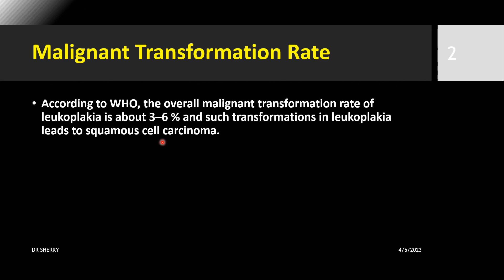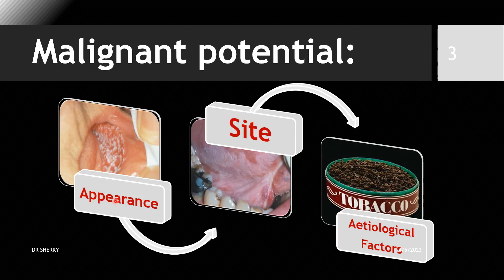Factors affecting malignant transformation of leukoplakia to SCC include: site, etiology, gender, and age. From a gender point of view, female gender is most prone. Tobacco use is a key etiological factor. Age is also an important contributing factor.